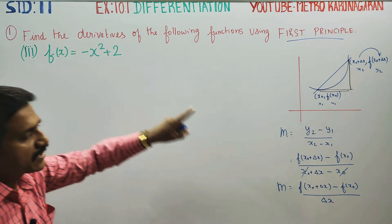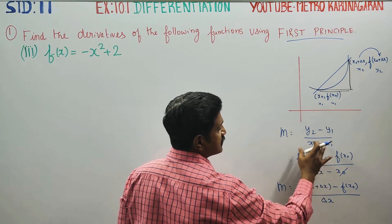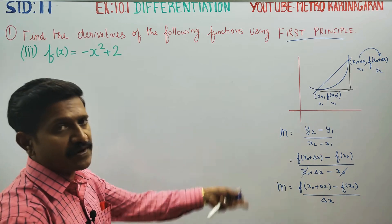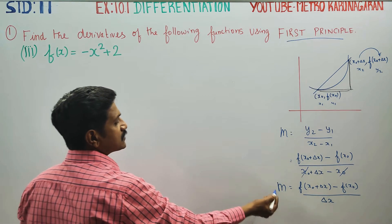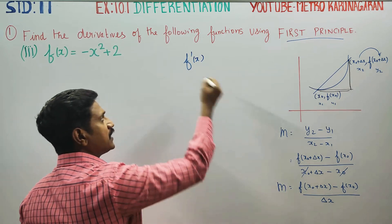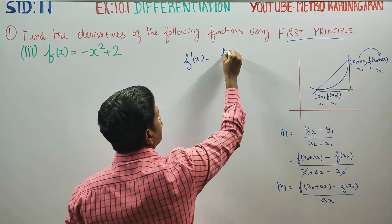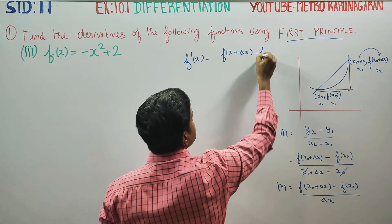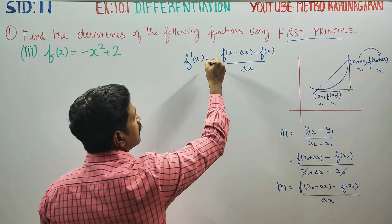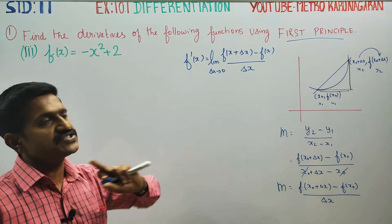That's why we get the first principle to find the derivative. The slope concept leads to the first principle formula. The terminology is 'derivative.' This formula is: limit as delta x tends to 0 of [f(x + delta x) - f(x)] / delta x. This is differentiation or derivative.